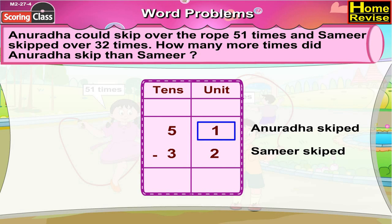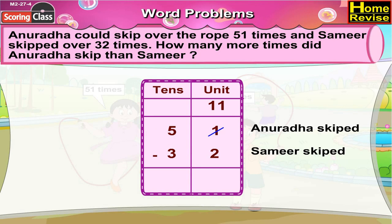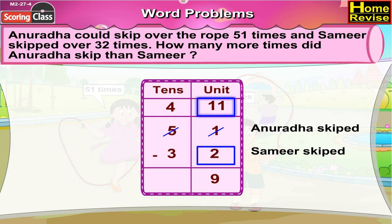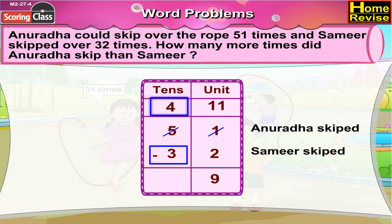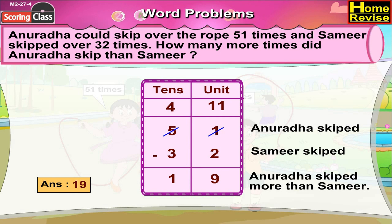2 cannot be subtracted from 1, so we will untie 1 ten from 5 tens. Now 5 tens 1 unit would be 4 tens 11 units. 11 minus 2 is 9. 4 minus 3 is 1. So it is 1 ten 9 units, or 19.